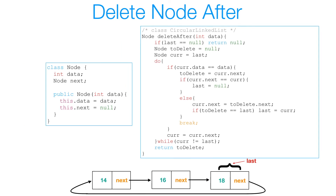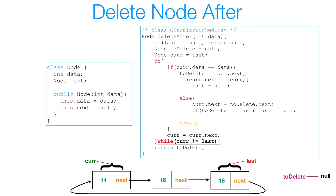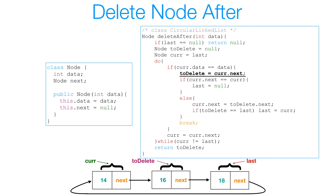Here's the solution. The method may look long but once you understand the logic, the code flows easily. First I check if last is null — if so, I return null since there are no nodes. Then I create two reference variables: to-delete, to track the node I want to delete, and cur, to iterate over the list. Inside my do-while loop, I check if cur's data equals the data I want to delete after — the data is 14, so it doesn't match initially, and I set cur equal to cur.next.